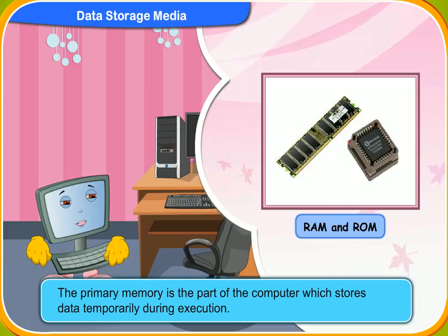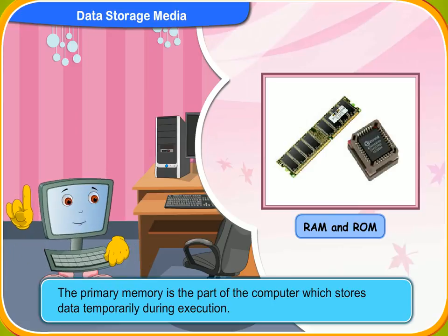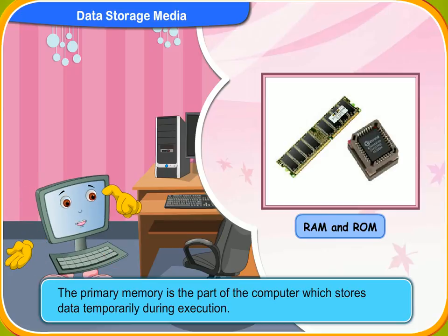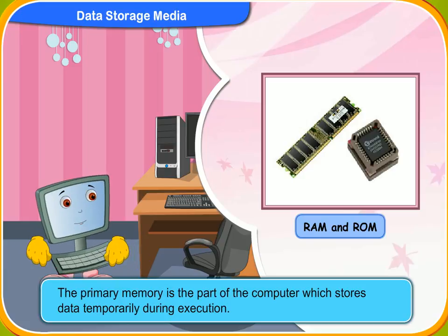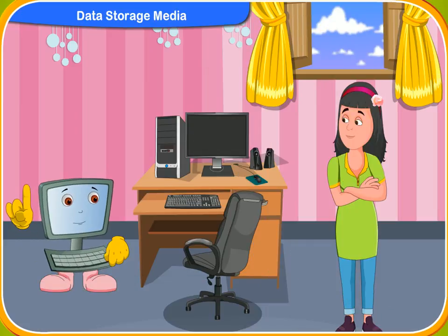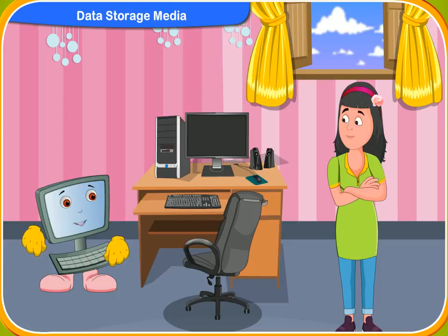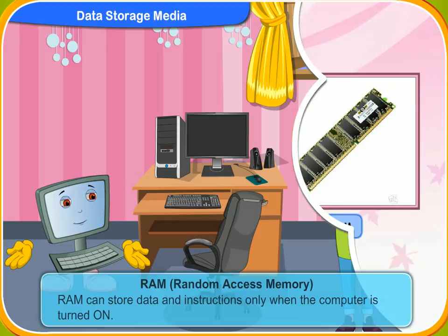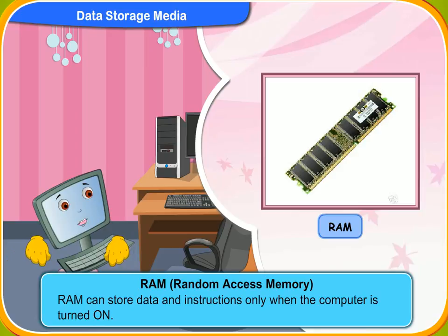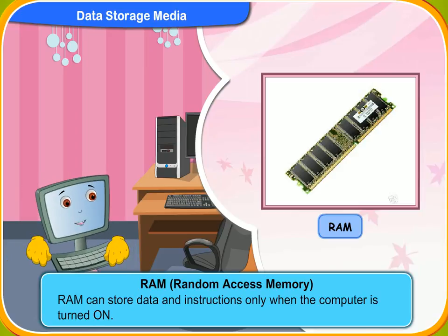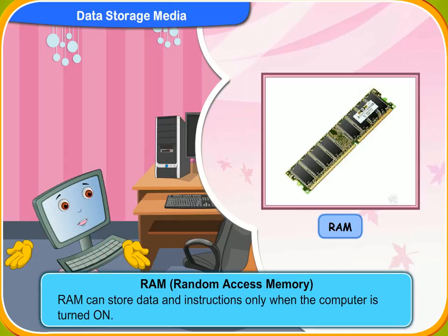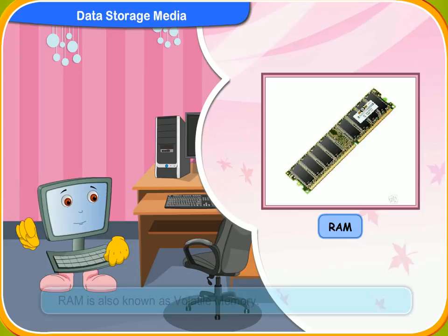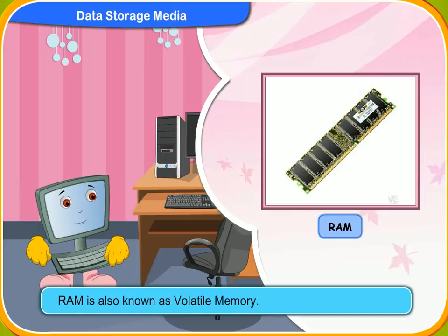The primary memory is the part of the computer which stores data temporarily during execution. The computer's primary memory lets us know about the amount of data that a computer can store in it. The full form of RAM is random access memory. RAM can store data and instructions only when the computer is turned on. You can read and write data on this temporary memory. If the power suddenly goes out, all the data stored on it is lost. So RAM is also known as volatile memory.